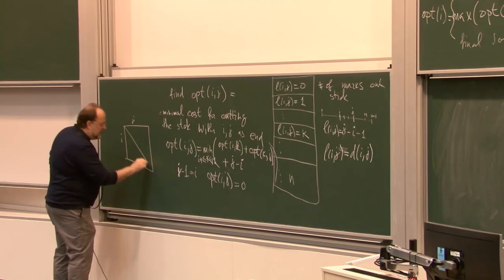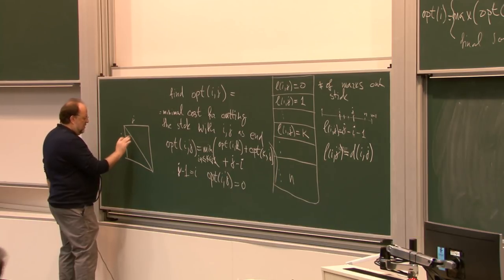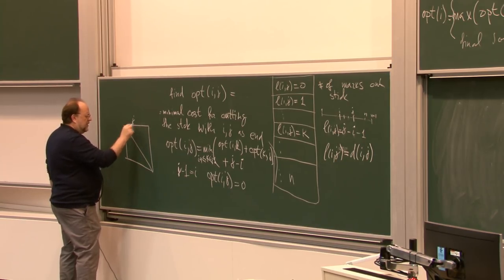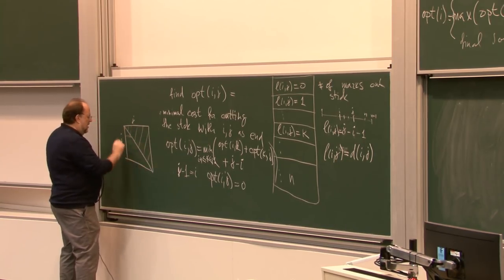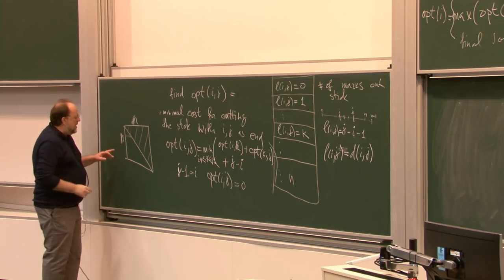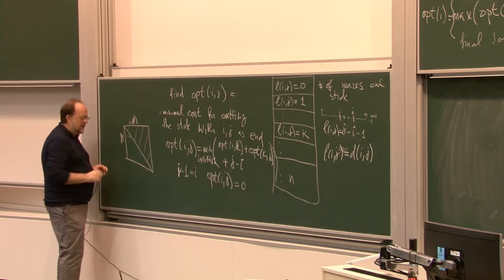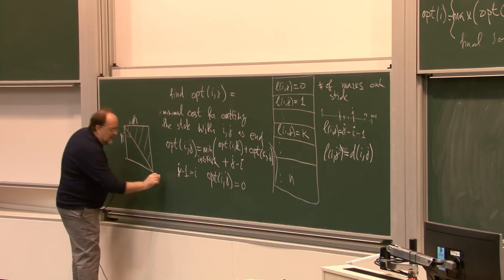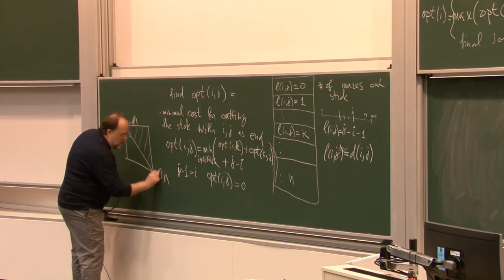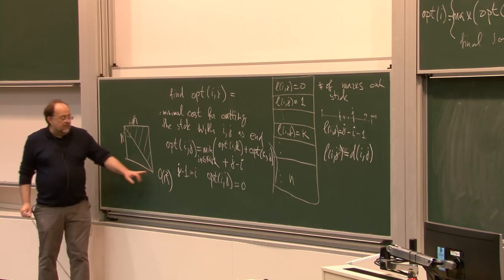Assuming J is bigger than I, this part of the table gives n many marks here and n many marks here — the first mark ranges and the second mark. So the total number of entries is O(n²), meaning you have to fill a table of quadratic size.